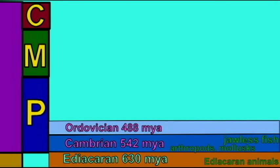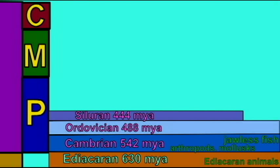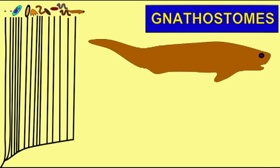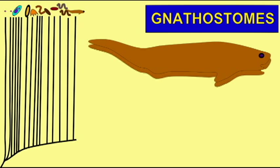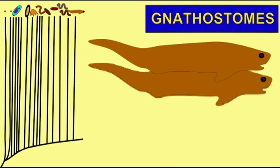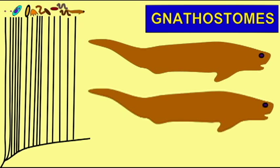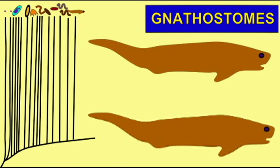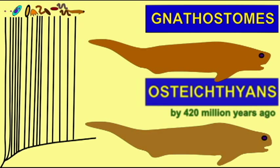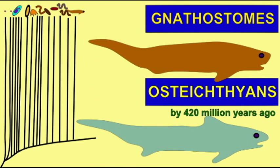The first Osteichthians — the group which includes bony fish and tetrapods — appeared in the Lower Silurian Period. These first Osteichthians evolved a number of traits which would be shared by all modern groups of bony fish and tetrapods.